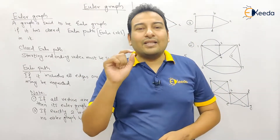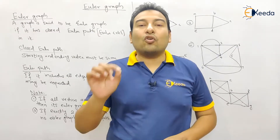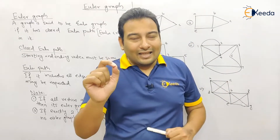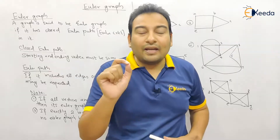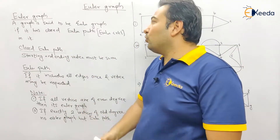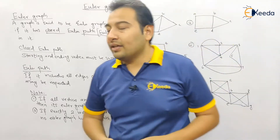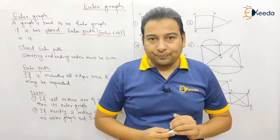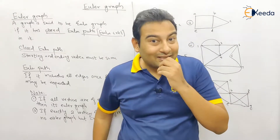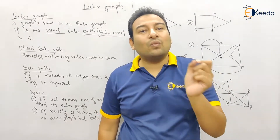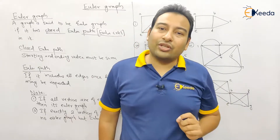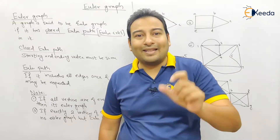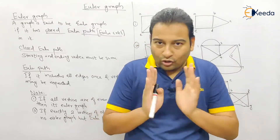A graph is said to be an Euler graph if it contains a closed Euler path. A closed Euler path is also called an Euler circuit. Closed means the starting and ending vertex must be the same — similar to what we discussed about closed walks. So a graph is an Euler graph if its starting and ending vertex is the same.